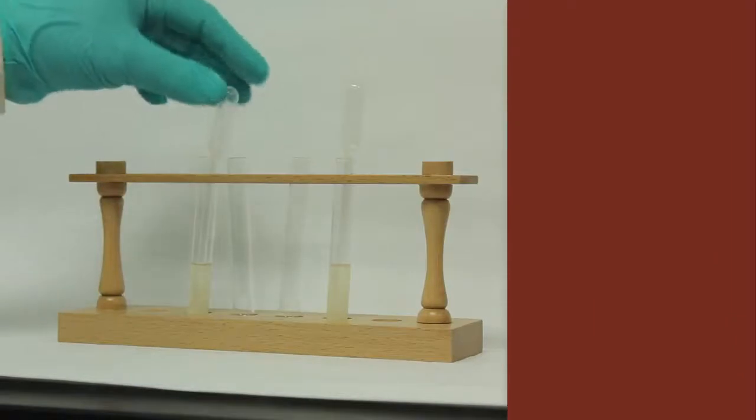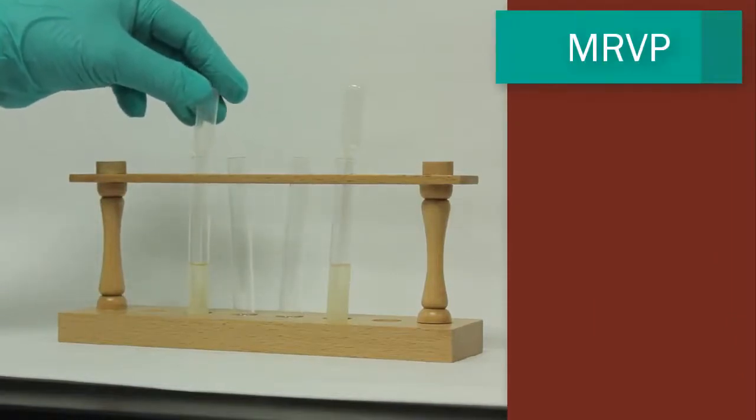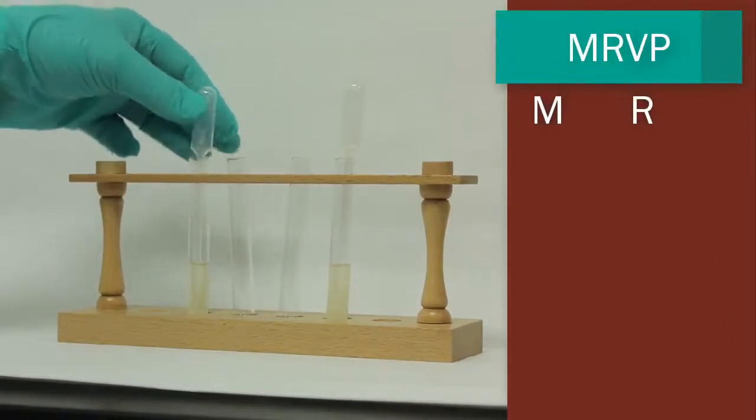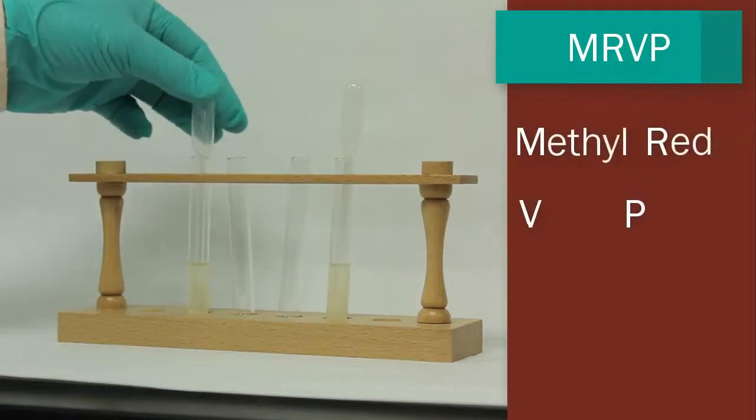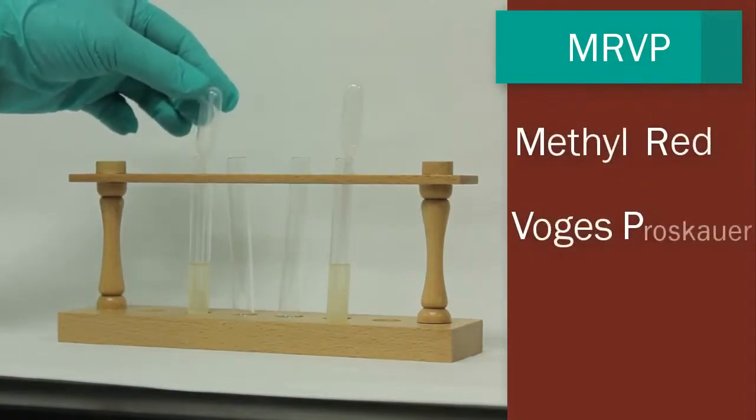So this is the second part of the MRVP test. Remember in the first video we talked about MR stands for methyl red, the VP stands for Voges Proskauer.